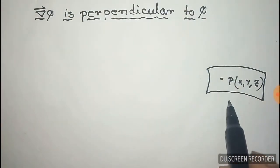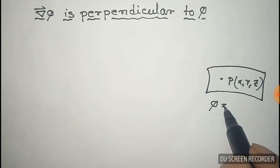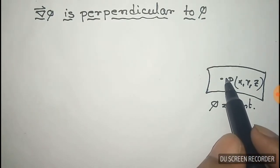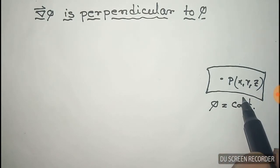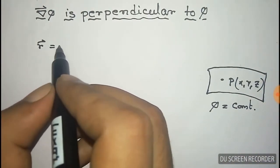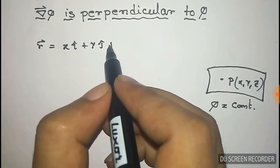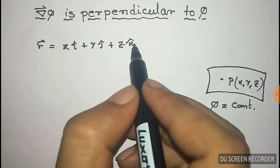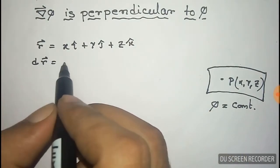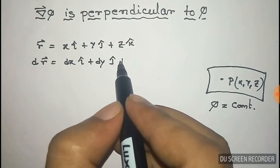We have to prove that the gradient of φ is perpendicular to the surface φ equals a constant. Take a point P at coordinates (x, y, z) on the surface. The position vector of point P is given by xi + yj + zk, so the differential dr vector is dx·i + dy·j + dz·k.